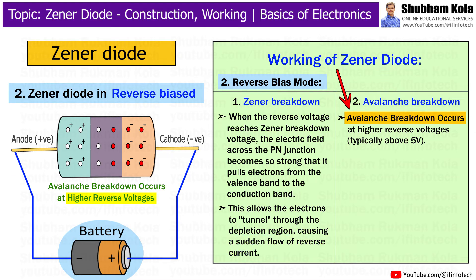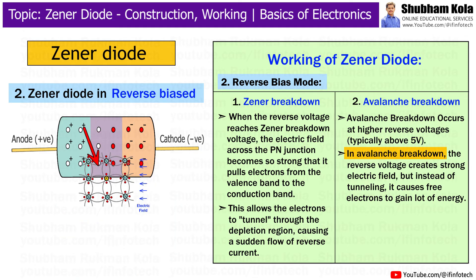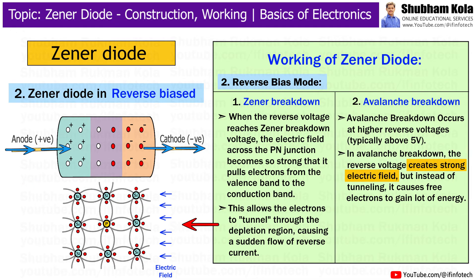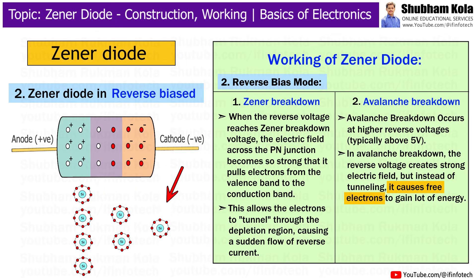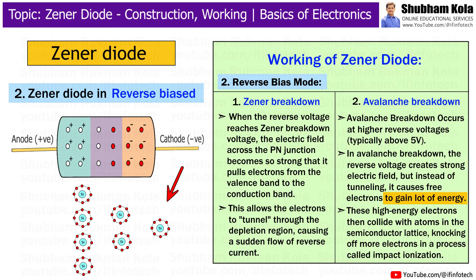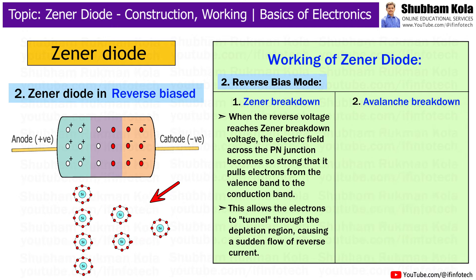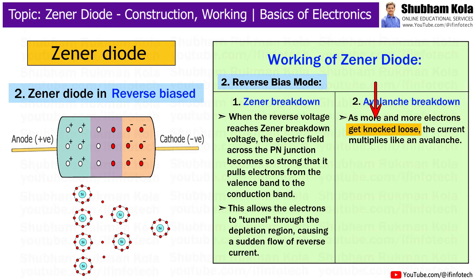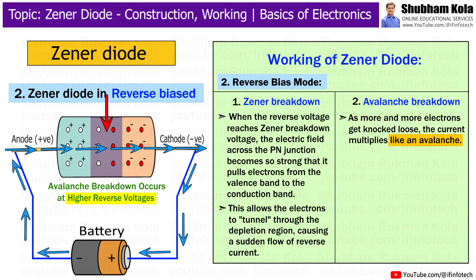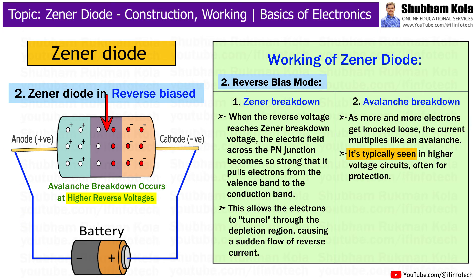Avalanche breakdown occurs at higher reverse voltages, typically above 5V. In Avalanche breakdown, the reverse voltage creates a strong electric field which causes free electrons to gain a lot of energy. These high-energy electrons then collide with atoms in the semiconductor lattice, knocking off more electrons in a process called impact ionization. As more and more electrons are knocked loose, the current multiplies like an avalanche. This is typically seen in higher voltage circuits, often for protection.